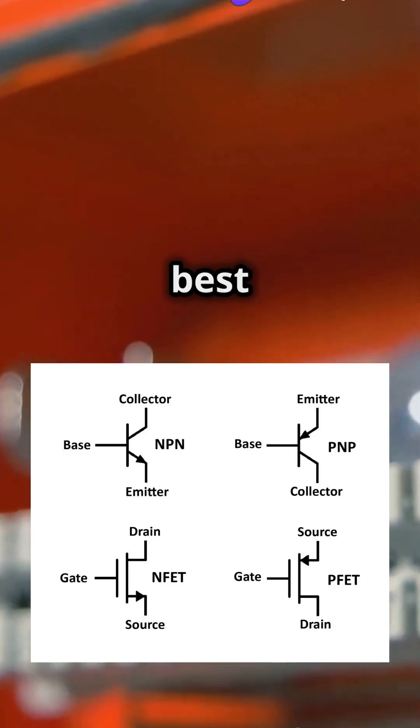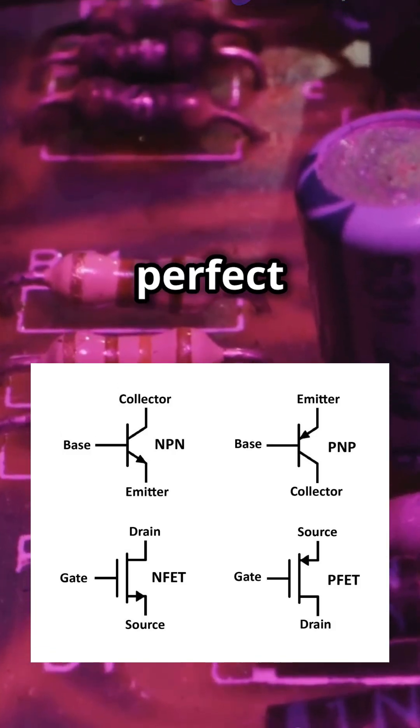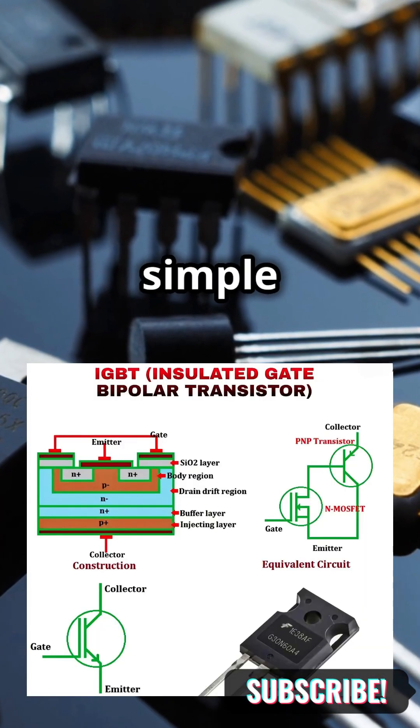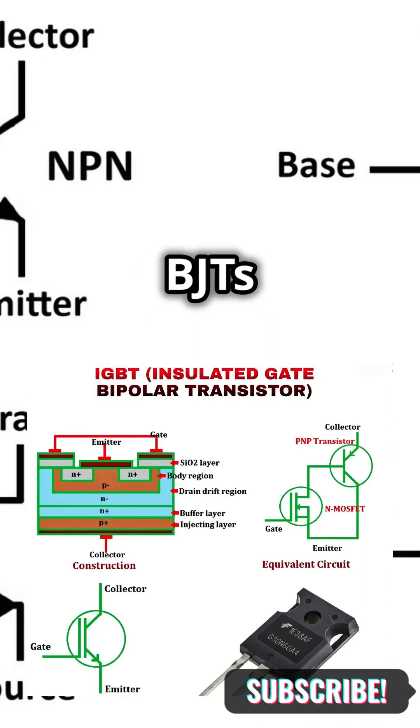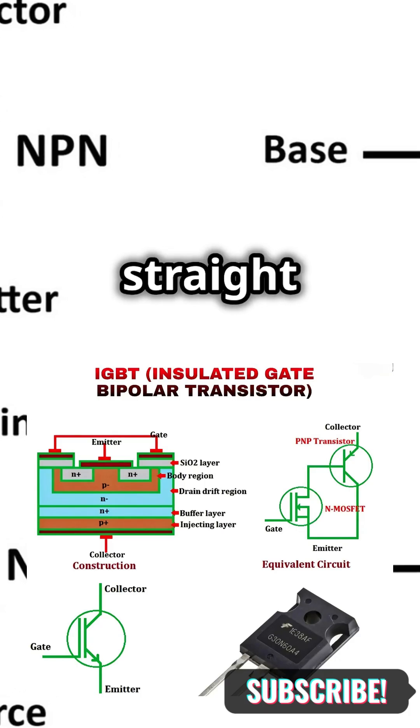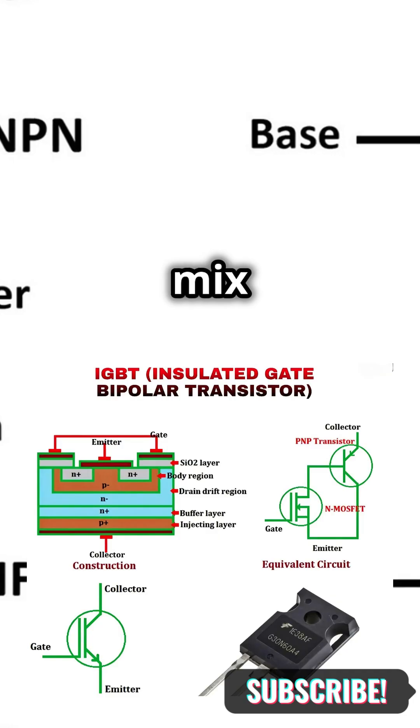And IGBTs combine the best of both worlds. They're perfect for high power applications. Symbols can look tricky, but they're simple once you get the hang of them. BJTs have arrows, FETs have a straight line, and IGBTs mix elements of both.